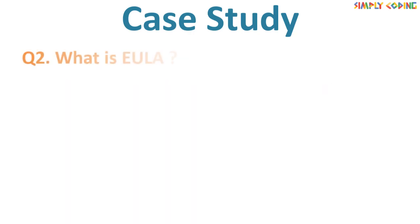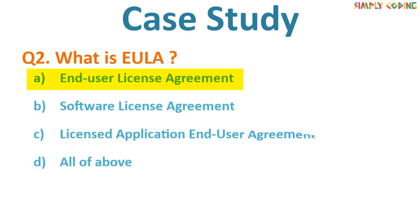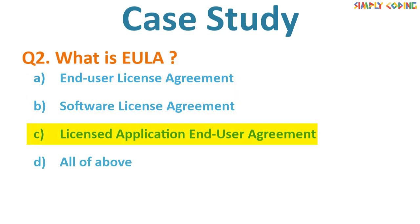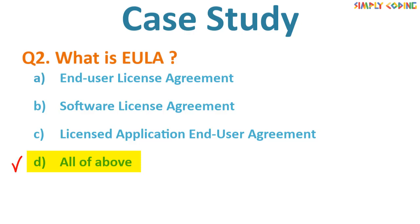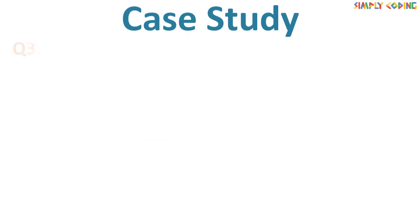Next question: What is EULA? Options: A) End User License Agreement. B) Software License Agreement. C) Licensed Application End User Agreement. D) All of the above. Now this is a trick question, as the full form of EULA was not explicitly stated. The answer is actually D, because an End User License Agreement can be called any of the listed names.